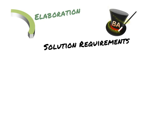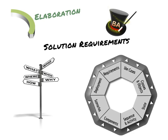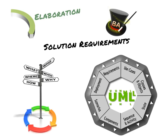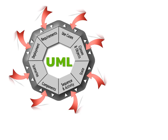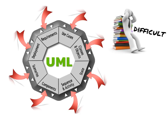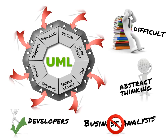In the elaboration phase, the BA defines solution requirements. One of the major techniques that has evolved to support object-oriented system development, and by association iterative methodologies, is the Unified Modeling Language, or UML. The UML is a very complex set of diagramming symbols, which makes it relatively difficult to learn and requires highly abstract thinking. It is being applied successfully by developers in the software development process on a regular basis, but due to its complexity, is seldom used in the business analysis arena.